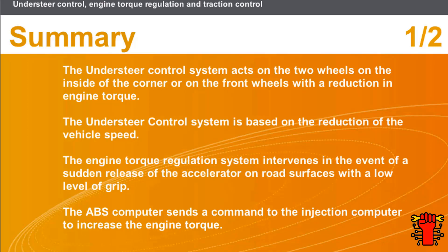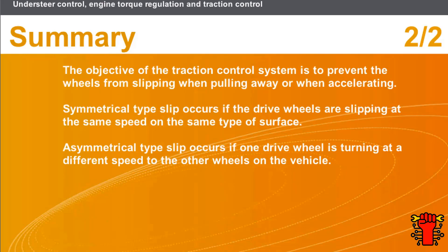In summary: the understeer control system acts on the two wheels on the inside of the corner or on the front wheels with a reduction in engine torque, and is based on the reduction of the vehicle speed. The engine torque regulation system intervenes in the event of a sudden release of the accelerator on road surfaces with a low level of grip, and the ABS computer sends a command to the injection computer to increase the engine torque. The objective of the traction control system is to prevent the wheels from slipping when pulling away or when accelerating. Symmetrical type slip occurs if the drive wheels are slipping at the same speed on the same type of surface, while asymmetrical type slip occurs if one drive wheel is turning at a different speed to the other wheels on the vehicle.